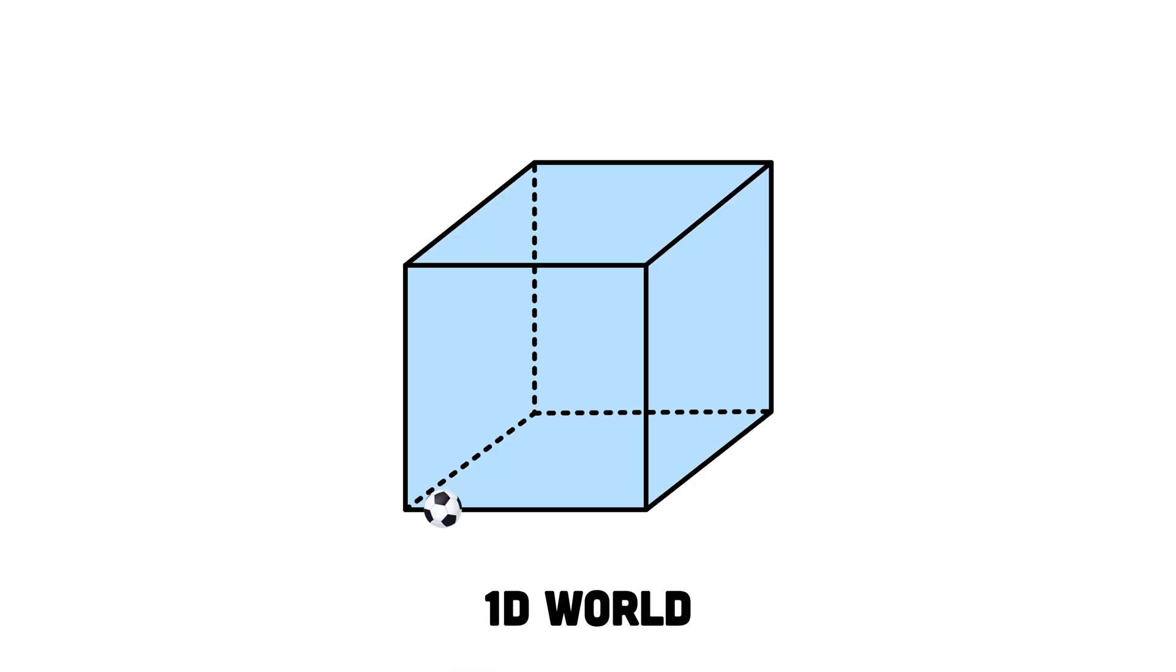Imagine a world with only one spatial dimension. We could only move forward or backward along a line. In a world with two spatial dimensions like a flat sheet of paper, we could move left, right, up, or down, but that's it.